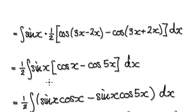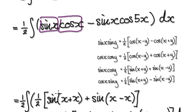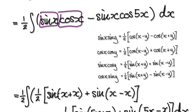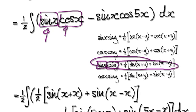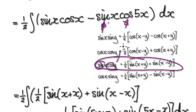Now use the same process to break up sine times cosine. To break up a sine and a cosine, you locate this identity — sine times cosine. So you would use this formula for both of these terms here.